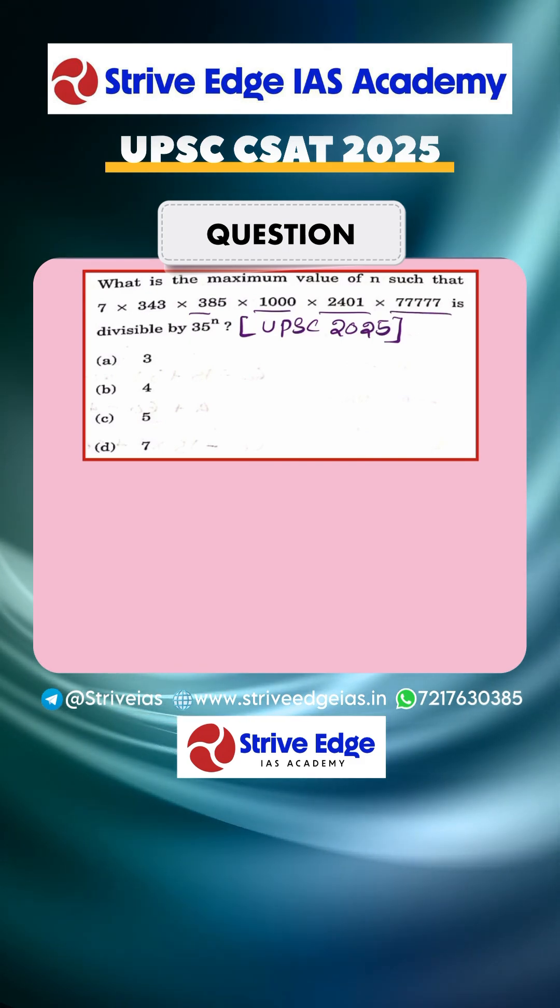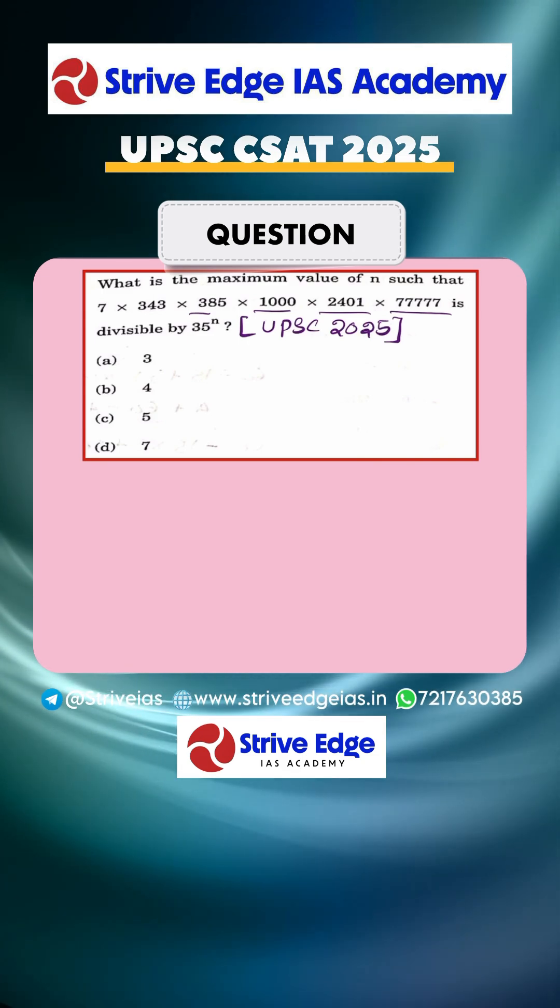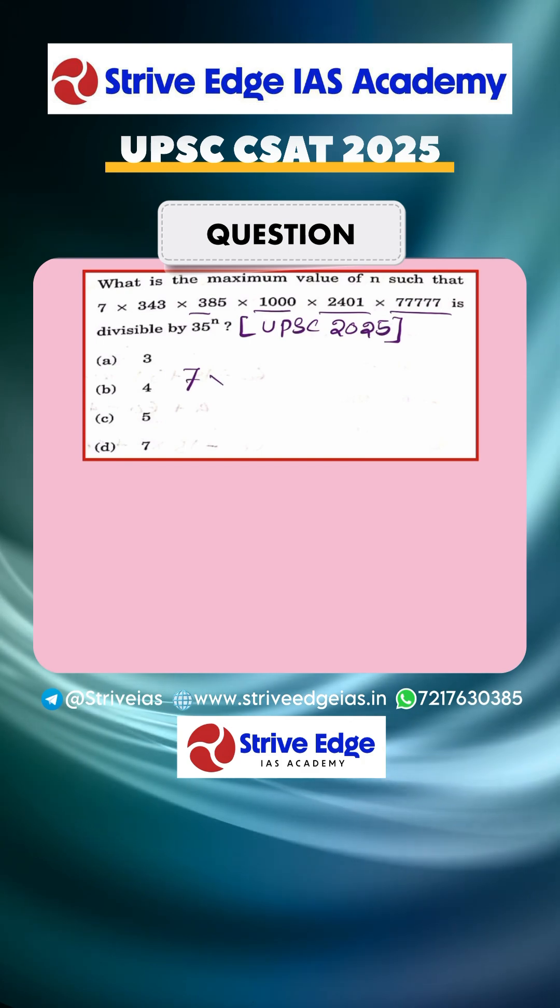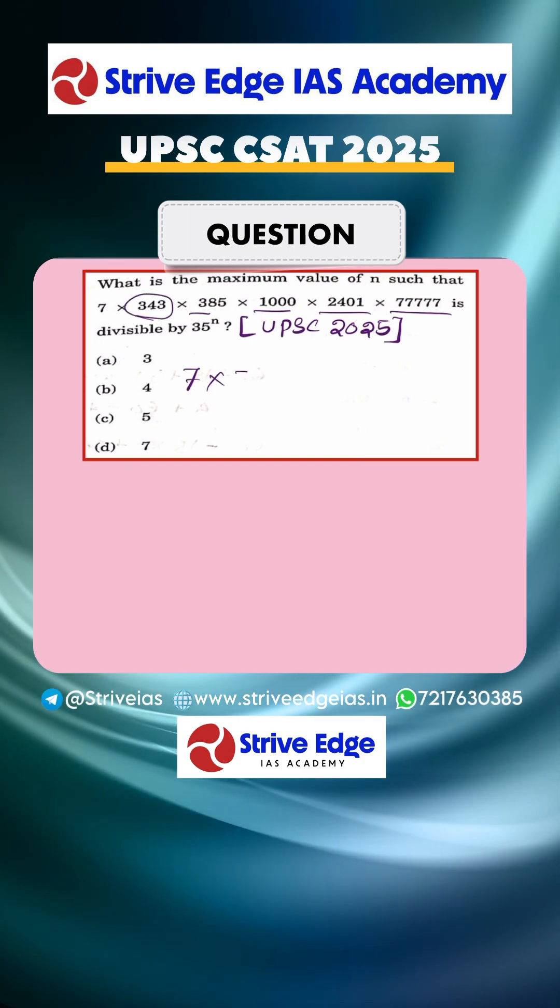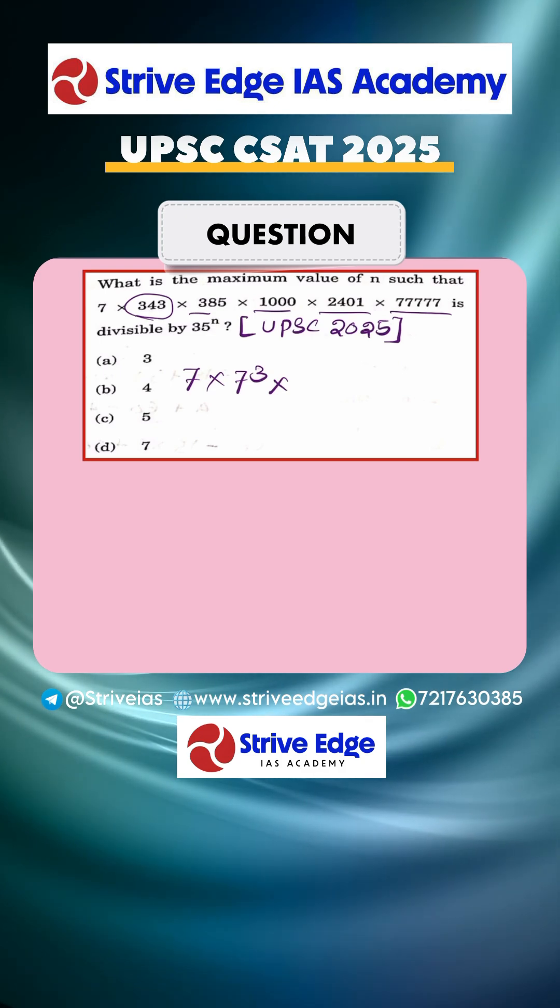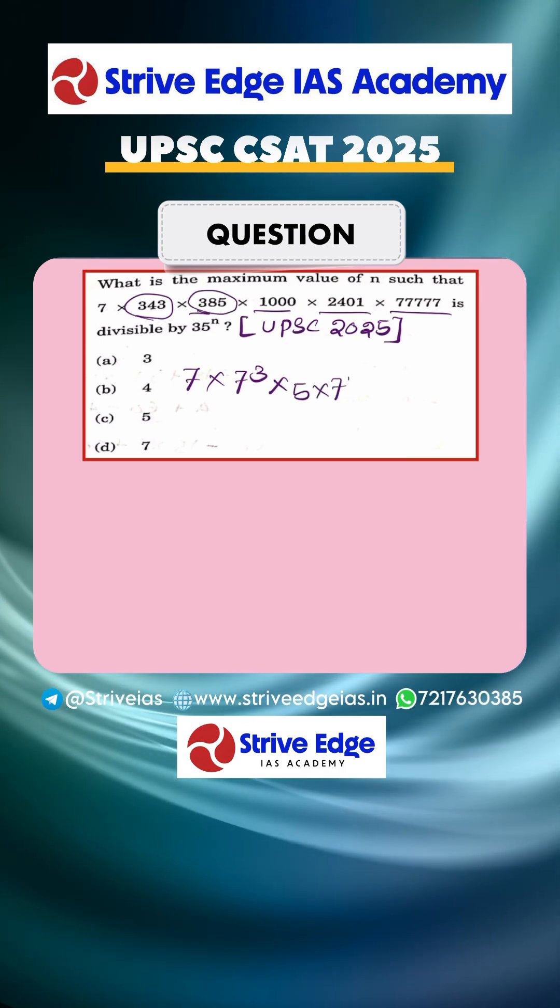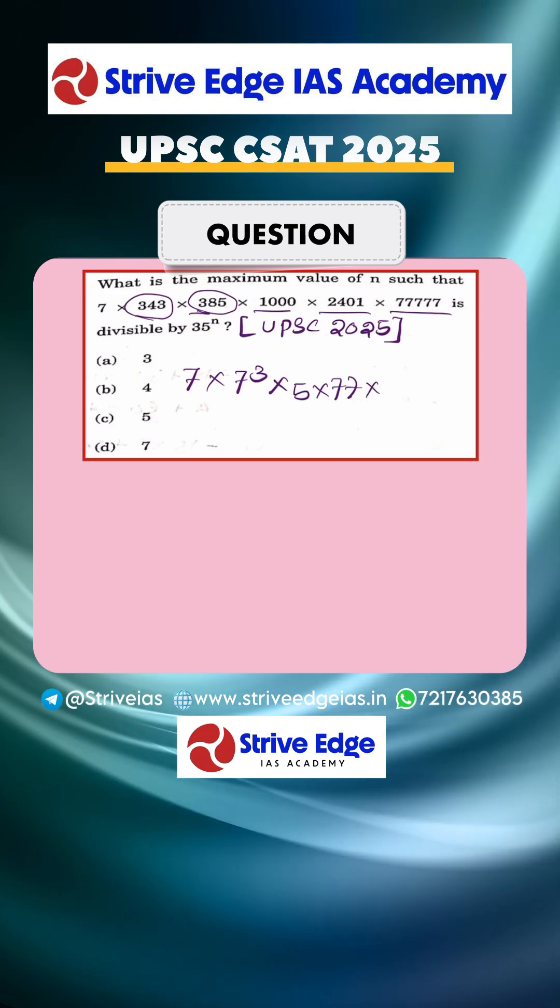We'll factorize this multiplication into smaller numbers. So 7, and I can write 343 as 7 to the power 3. We have to remember that. I can write 385 equals 5 × 77.